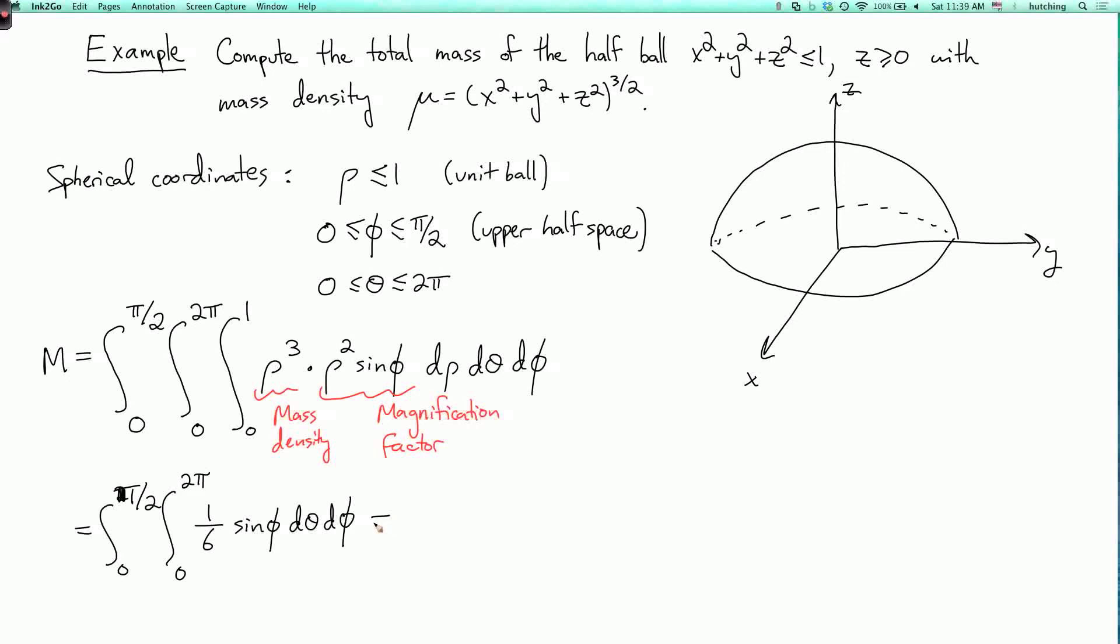Now when I integrate over theta, the sine phi is acting as a constant. So I just have to multiply by 2 pi. So I get the integral from 0 to pi over 2.